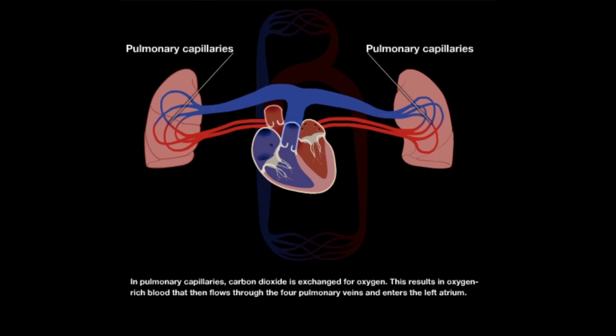In pulmonary capillaries, carbon dioxide is exchanged for oxygen. This results in oxygen-rich blood that then flows through the four pulmonary veins and enters the left atrium.